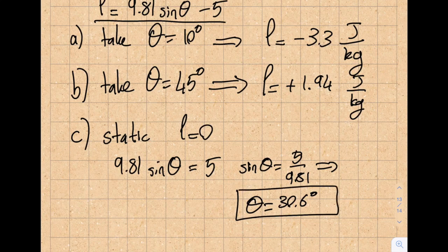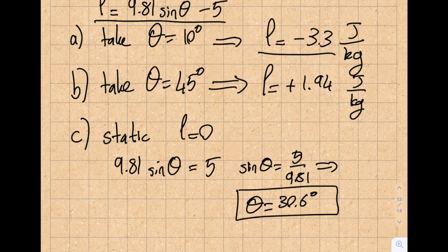So I'm going to have 9.81 times sine theta equals 5. So if this is satisfied, and from here I get sine theta of 5 divided by 9.81, and this will give me theta as 30.6 degrees. So this is the critical angle that I have. If my angle is less than 30.6, my flow is going to go up. 30.6 and above, it will be going down.